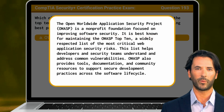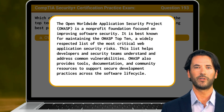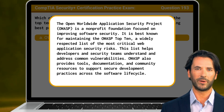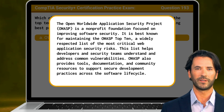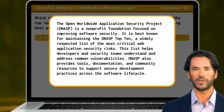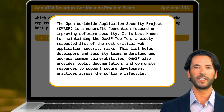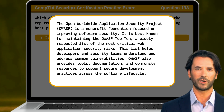The Open Worldwide Application Security Project, or OWASP, is a nonprofit foundation focused on improving software security. It is best known for maintaining the OWASP Top 10, a widely respected list of the most critical web application security risks. This list helps developers and security teams understand and address common vulnerabilities. OWASP also provides tools, documentation, and community resources to support secure development practices across the software lifecycle.